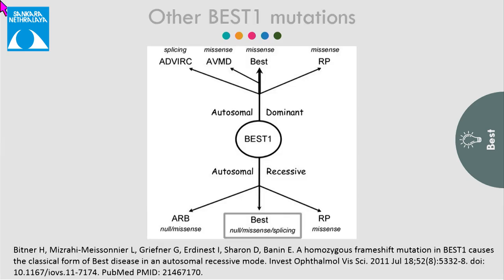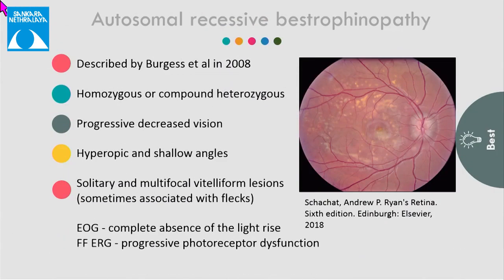BEST1 gene mutation is also associated with other diseases known as bestrophinopathies. Autosomal recessive bestrophinopathy was first described by Burgess et al. It generally presents in the second decade of life with progressive loss of vision. They are generally hyperopes with shallow angles, and on fundus examination they can have solitary or multifocal lesions, sometimes associated with flecks.